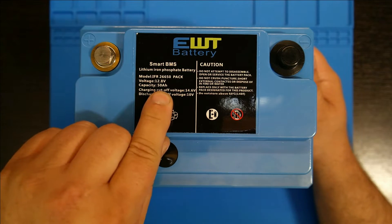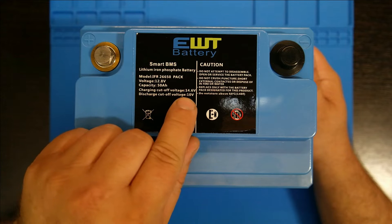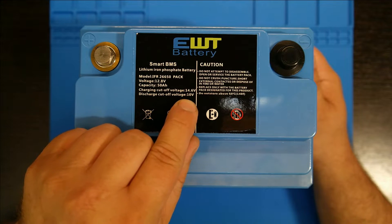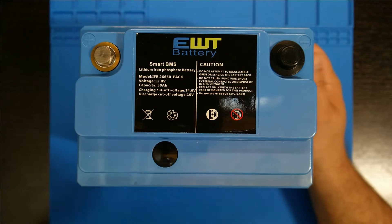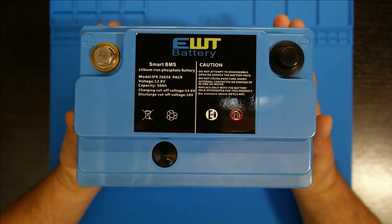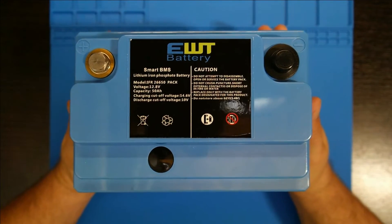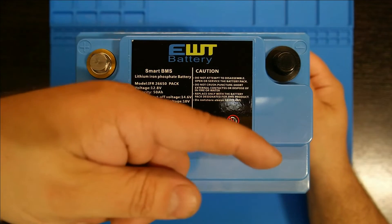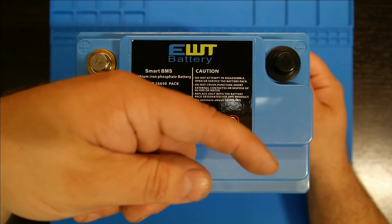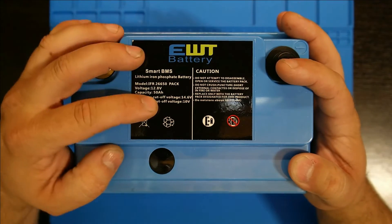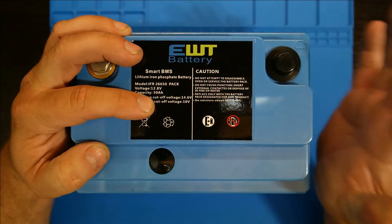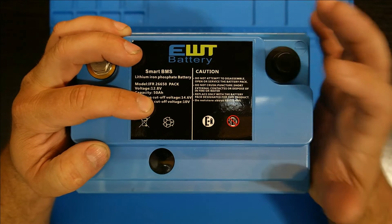12.8 volts which is kind of interesting, usually it's 13.2 instead of resting voltage. 50 amp hours, charging cutoff voltage is at 14.6 and the discharge at 10 volts. This is less than half the size of that battery and definitely less weight. The lead acid I just almost killed myself with weighs 71 pounds, this is 15.